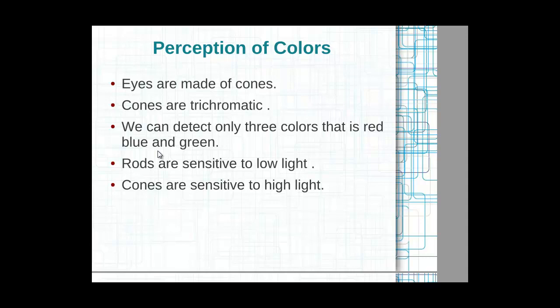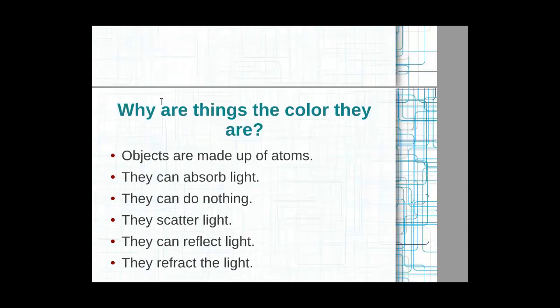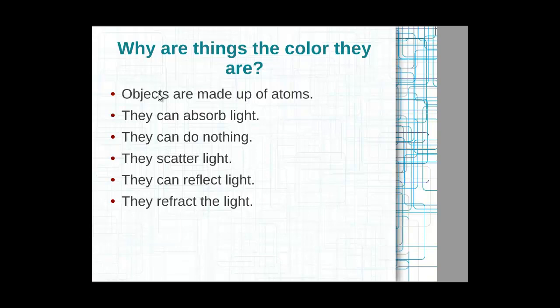Let's take a white object for example. Two white objects — one may appear whiter and one may appear less white compared to the first. One important factor is that any material is made up of atoms, and whatever you see around you may absorb a certain amount of light, reflect a certain amount of light, scatter a certain amount of light, or it may not do anything at all.